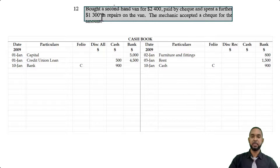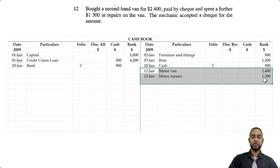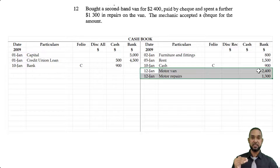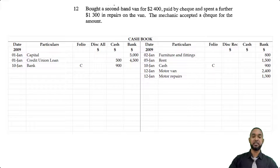On the 12th, we bought a secondhand van for $2,400 paid by check, and spent a further $1,300 in repairs on the van — the mechanic accepted a check for that amount. So we have two check payments: one for the motor van for $2,400 and one for motor repairs of $1,300. Both items are on the same day and both go on the credit side, because they represent payments — decreases in our bank account, since we used checks. Bank is an asset; to record a decrease in an asset you have to credit the asset account. So we're crediting the cashbook for both transactions.